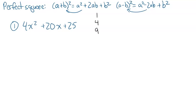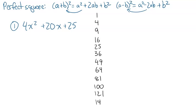The perfect squares are: 1, 4, 9, 16, 25, 36, 49, 64, 81, 100, 121, and 144 — that's from 1 times 1 all the way to 12 times 12, depending on what your teacher wants. So we look at the first and last terms and ask: can we take the square root of either of those? We can, if it's one of those perfect squares.